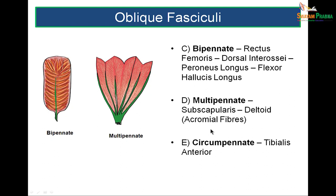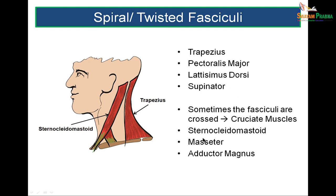There is another type of pennation called circumpennate, seen in the tibialis anterior of the leg. Spiral or twisted fasciculi are seen in the trapezius, pectoralis major, and latissimus dorsi, where fibers get twisted. Sometimes fasciculi even get crossed, as seen in the sternocleidomastoid, where the clavicular fibers and sternal fibers cross each other.